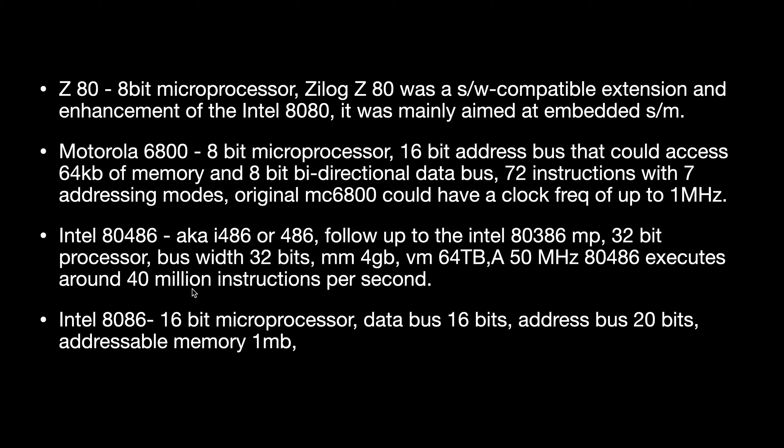Just remember: all Intel processor numbers prior to 8086 are 8-bit microprocessors. The Intel 8086 is a 16-bit processor, and the Intel 80486 is a 32-bit processor.